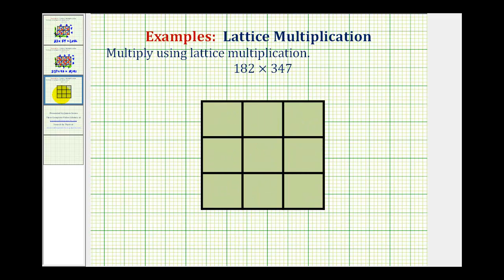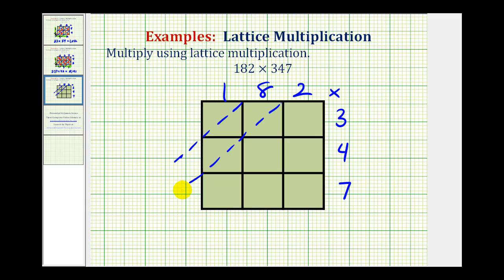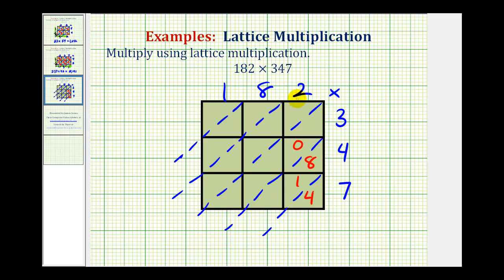Let's try one more. Here we have a three-digit number times a three-digit number, so we need a table that has three columns and three rows. We have 182 here and 347 here. We'll construct the diagonals. Now we can start finding our products. Two times seven is fourteen. Two times four is eight — zero eight. Two times three is six — zero six. Eight times seven is fifty-six. Eight times four is thirty-two. Eight times three is twenty-four. One times seven is seven — zero seven. One times four is zero four. And one times three is zero three.